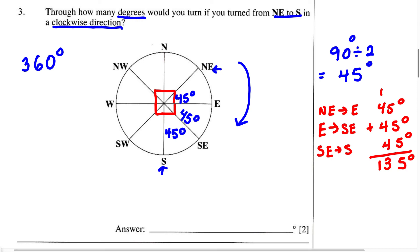Therefore, this is going to be our answer for this problem. To go from northeast to south in a clockwise direction, we are going to have to turn 135 degrees.